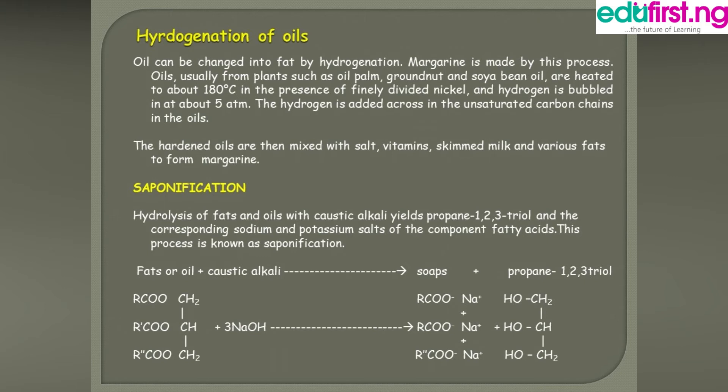This is the production of our regular margarine that we use at home. Saponification is the process of making soap — it involves the hydrolysis of fats and oils with caustic alkali (NaOH) to produce propane-1,2,3-triol and the corresponding sodium or potassium salts of the component fatty acids, which are the soap.